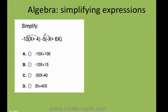We need to do the distributive property. So let's do it. Negative 10 times x is negative 10x. Negative times a positive is a negative, so negative 10 times 4 is negative 40.